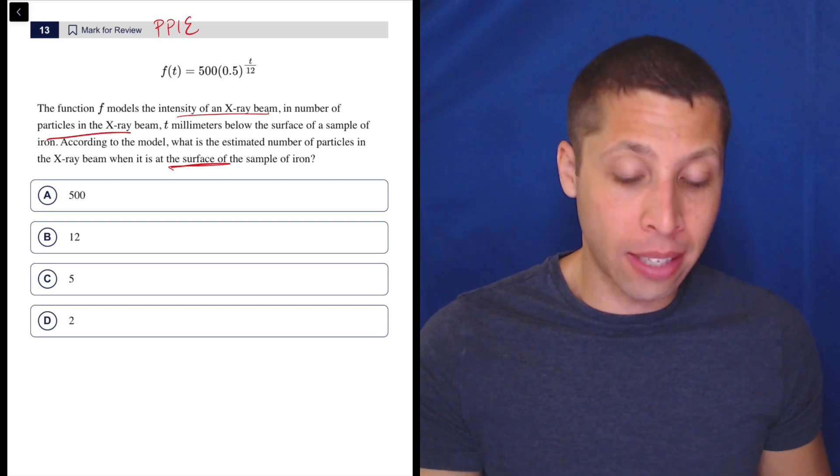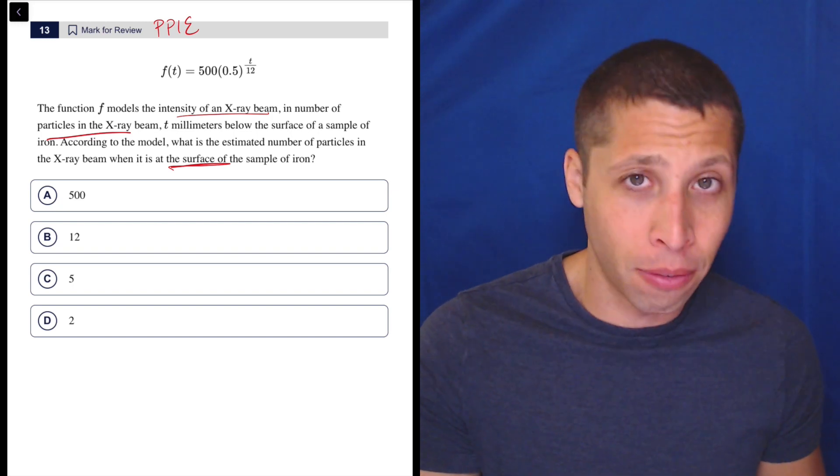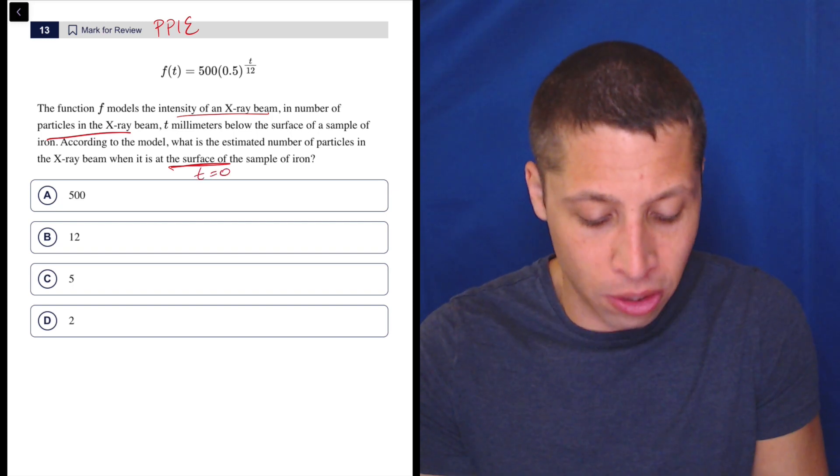So for lots of reasons in the SAT, we should recognize that usually the surface is where the height of something is zero, or in this case, the t is equal to zero.